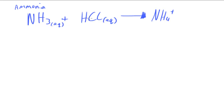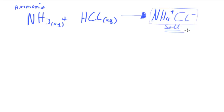This leaves Cl⁻ as a negative ion, and since they're oppositely charged they attract each other to form NH₄Cl — the salt produced. This is slightly special compared to the others because it does not produce water, just the salt. But it is still an alkali and a base.